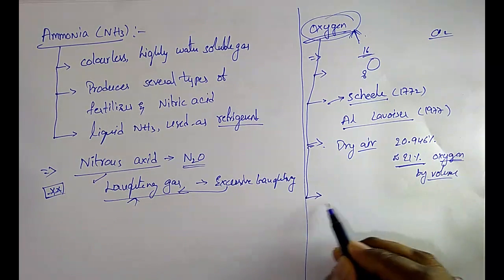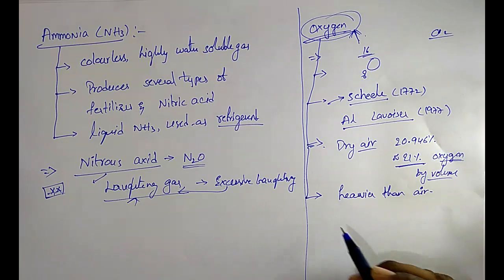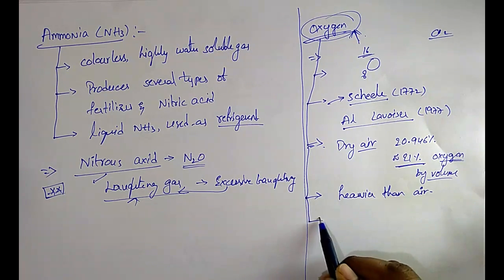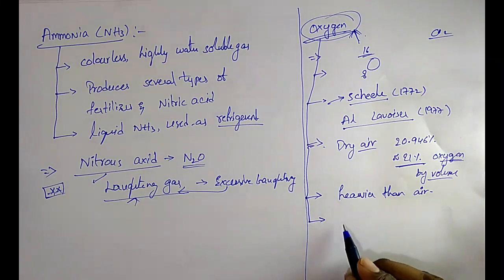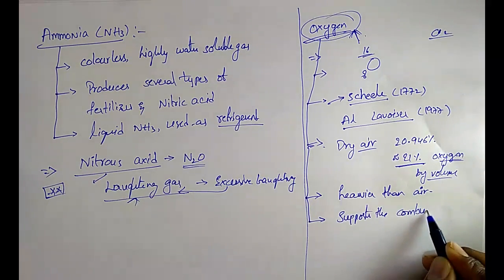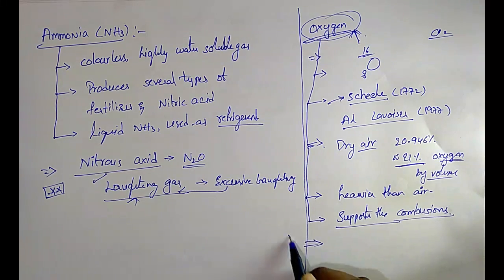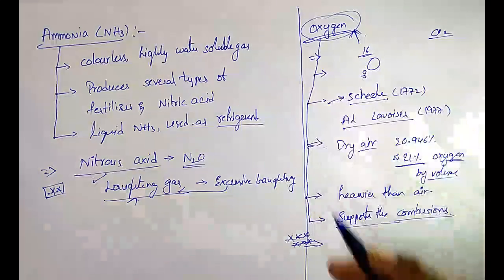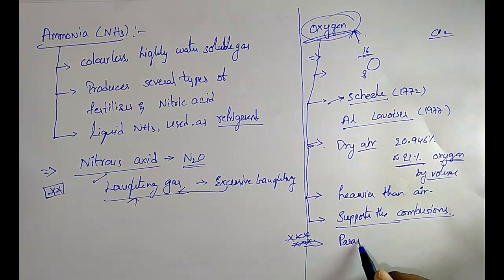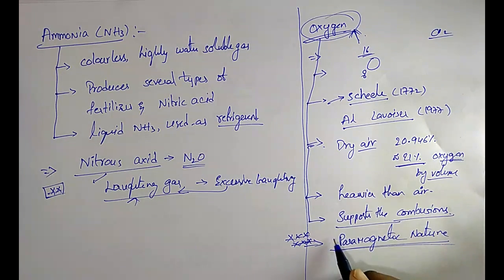In dry air, oxygen makes up nearly 20.946 percent, that is nearly 21 percent by volume. Oxygen is slightly heavier than air. It does not burn but it supports combustion, whereas carbon dioxide opposes combustion. A very important property is that oxygen is paramagnetic in nature.